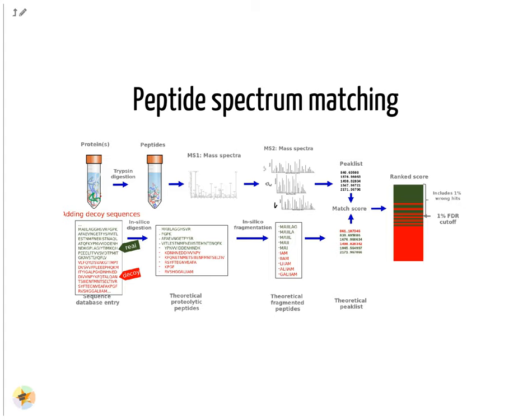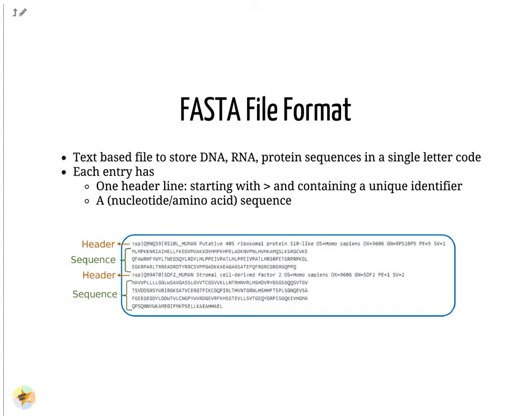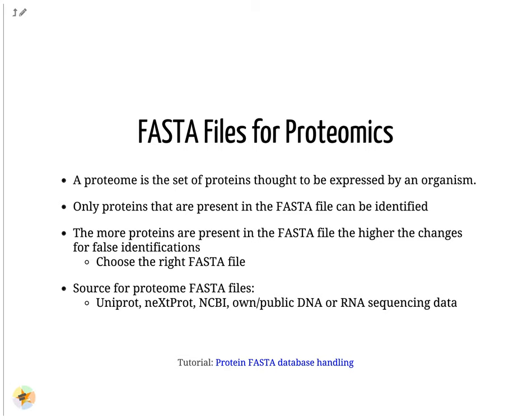The protein sequence database is stored in a FASTA file — a text-based file to store DNA, RNA or protein sequences in a single-letter code. Each entry contains a header line and the sequence. The header line starts with a greater-than sign followed by a unique identifier. A proteome is the set of proteins thought to be expressed by an organism. Only proteins present in the FASTA file can be identified, but the more proteins are present, the higher the chances for false identifications and the longer the computation time. Sources for proteome FASTA files include UniProt, Nextprot, NCBI, or DNA and RNA sequencing data.